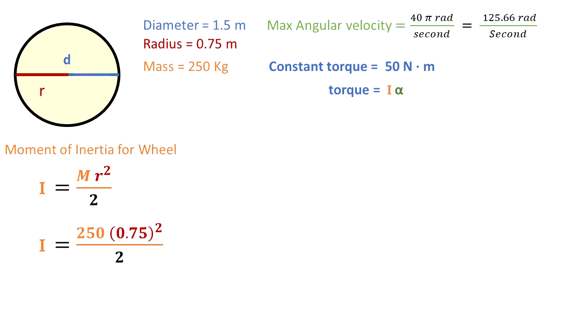From the information given, the mass is 250 kilograms, the radius is 0.75 meters. We square that and divide by 2. Remember that we need to use meters, kilograms, and seconds because we are using the international system of units. After computing these values, we get that the moment of inertia for this wheel is 70.313 kilograms meters squared.